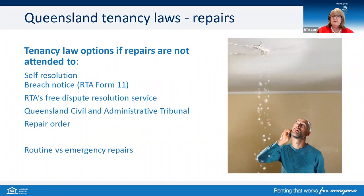There are two types of repairs. Routine, which may be like a dripping tap or a stove element not working, versus an emergency repair, such as a burst pipe causing flooding or a potential electrical safety issue.